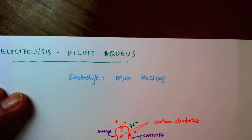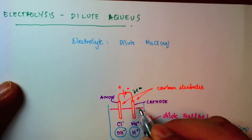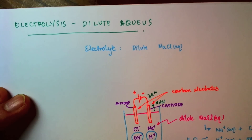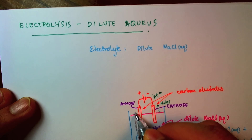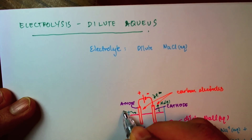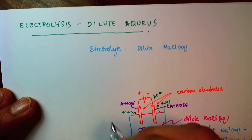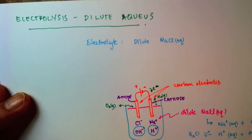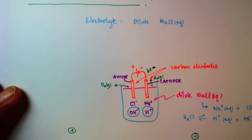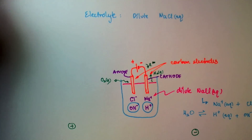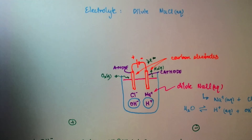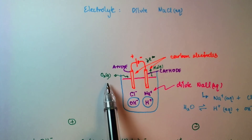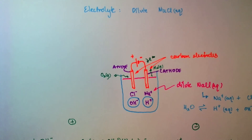Let's draw the products of the electrolysis. I have hydrogen gas released at the cathode, and this time I have oxygen released at the anode. For comparison between dilute and concentrated: in the concentrated case I had chlorine gas, but now I have oxygen gas instead.